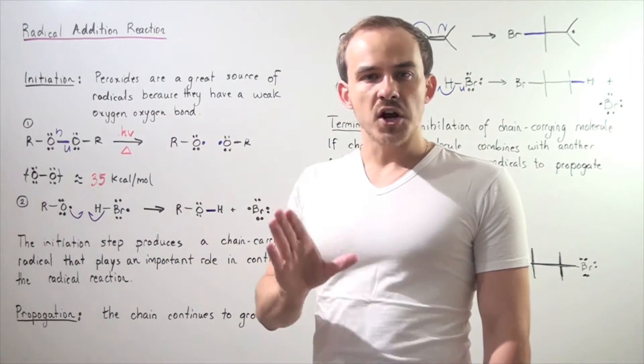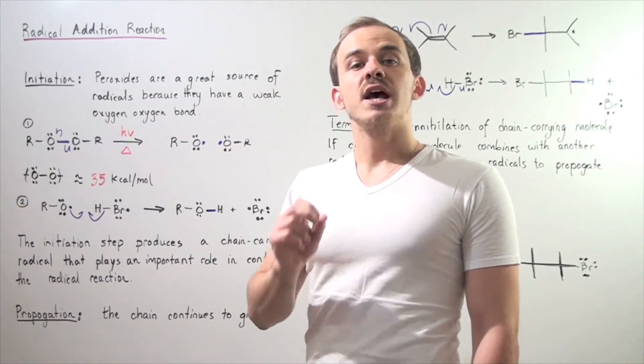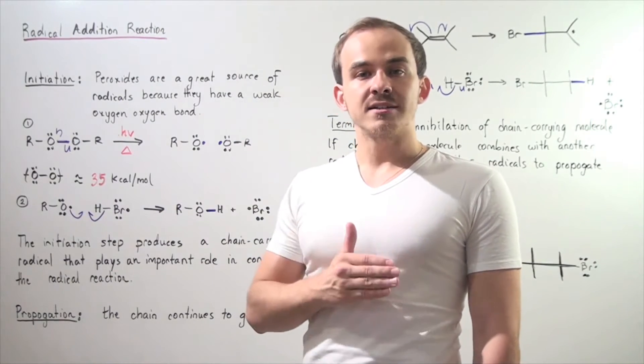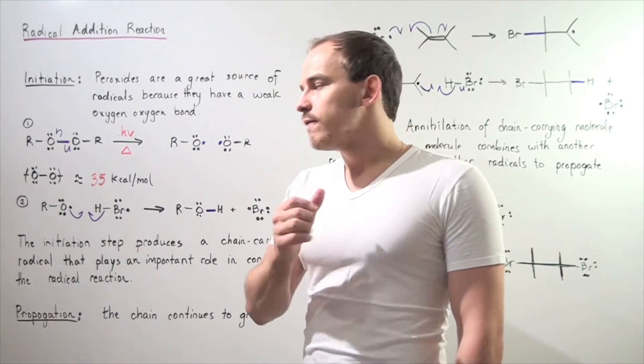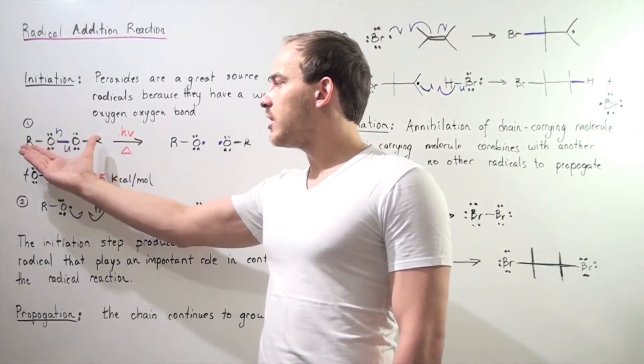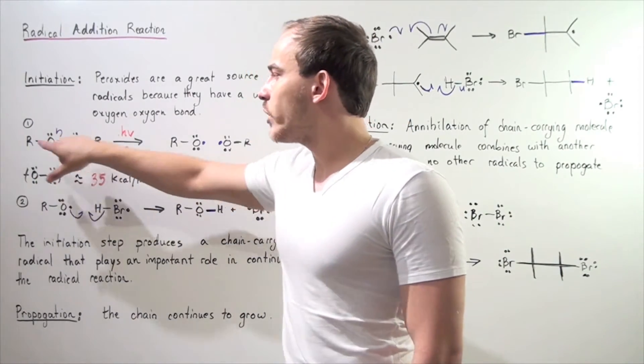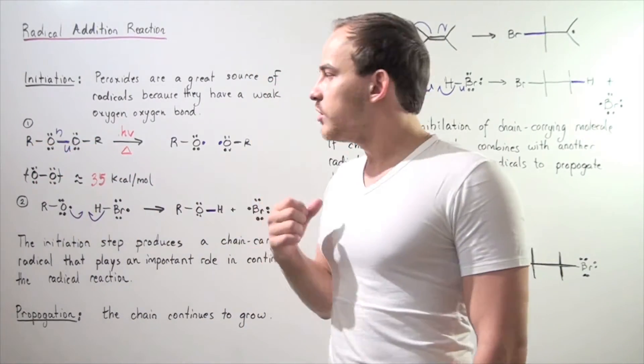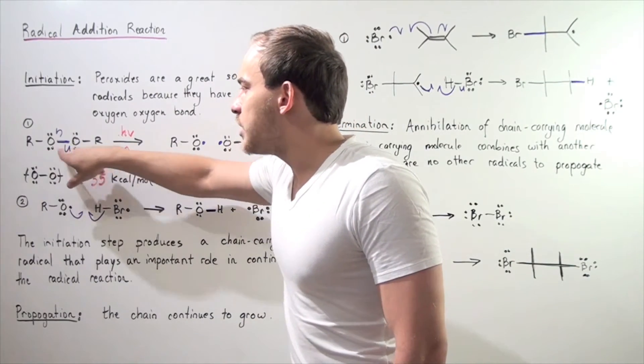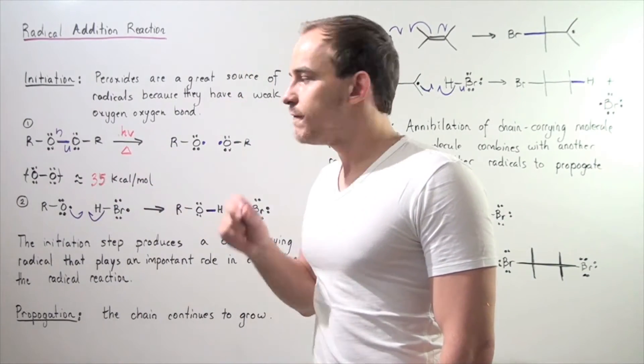Peroxides are a very good source of radicals because they have relatively weak oxygen-oxygen bonds. For example, if we look at the following peroxide where these R groups are two identical R groups, we'll notice there is an oxygen-oxygen sigma bond.